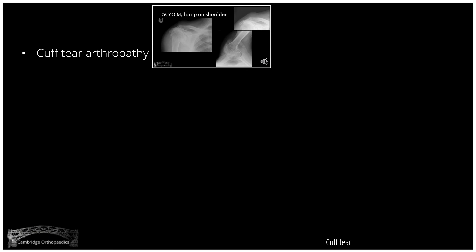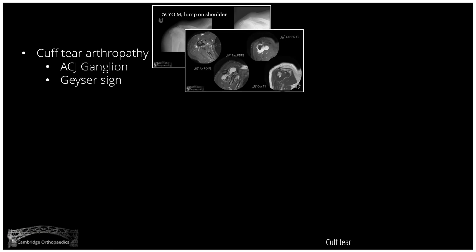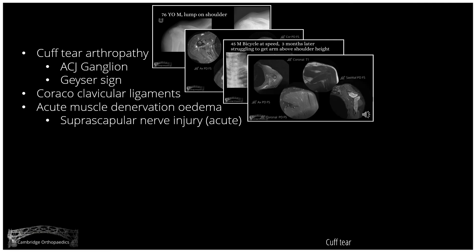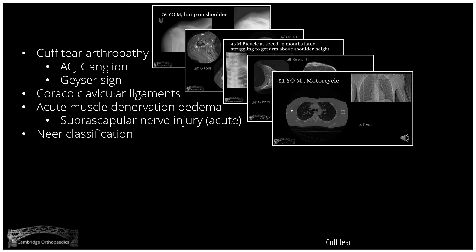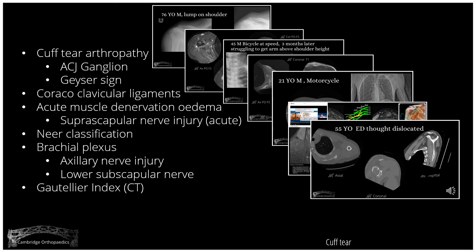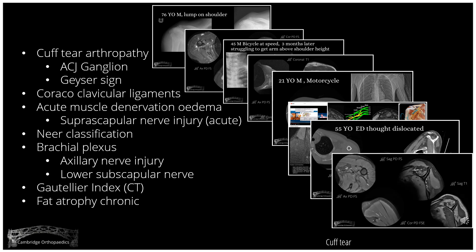This is chronic denervation of supraspinatus and infraspinatus due to chronic compression or injury to the suprascapular nerve. Google cuff arthropathy, AC joint ganglion or geyser sign. Think about the coracoclavicular ligaments when fixing lateral third clavicle fractures. Read about acute muscle denervation and edema involving the suprascapular nerve, the Neer classification, brachial plexus and associated nerves, and two isolated injuries to the axillary nerve and lower subscapular nerve. Did you notice on the soft tissue window on the sagittal CT images the fat atrophy of supraspinatus and infraspinatus? The Goutallier index was initially done on CTs, and this demonstrates chronic fat atrophy with replacement of muscle bulk with fat.